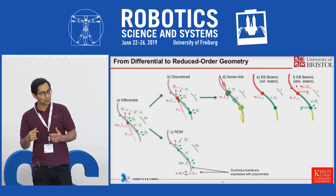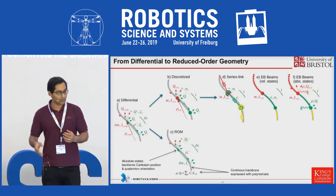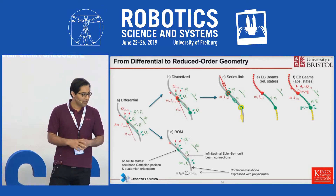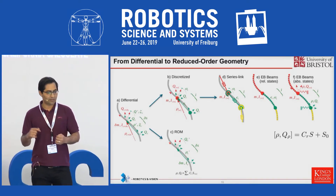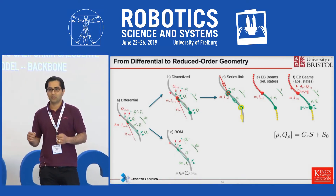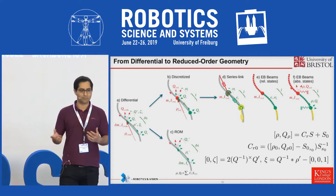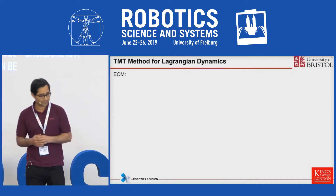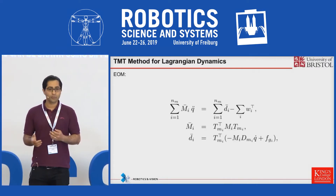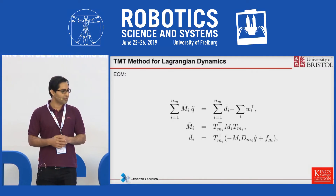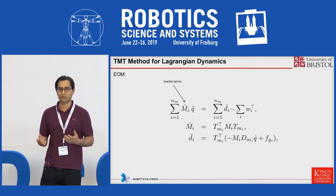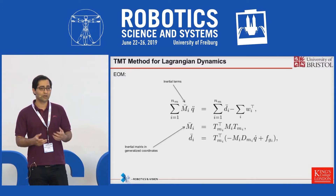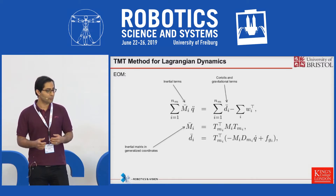For the reduced order model I assume the backbone configuration as a polynomial, and hence the strains can be derived using the differential inverse map. For dynamic modeling I use the TMT method, which directly derives the vector formalism of the Lagrangian equation of motion for you.